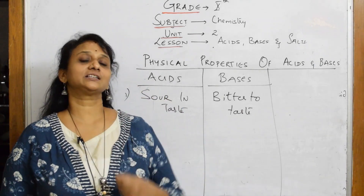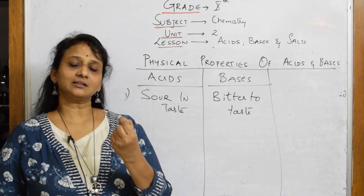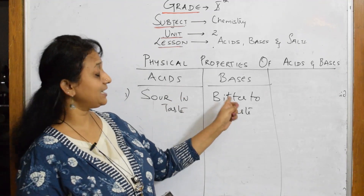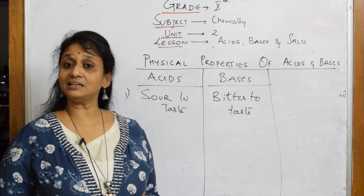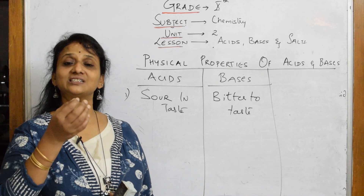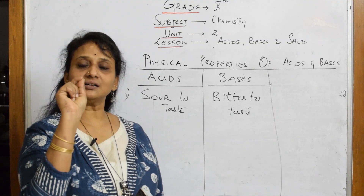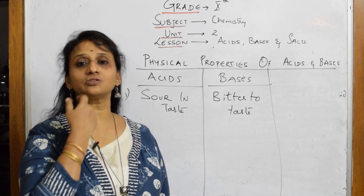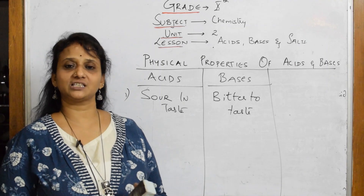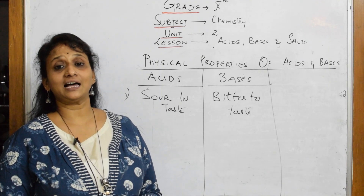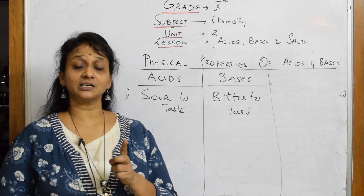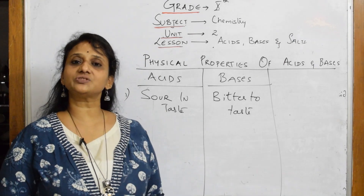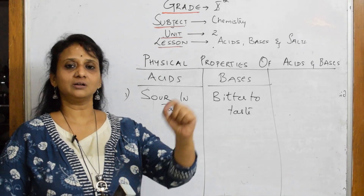Now, how do we test acids and bases? Remember, there are two categories: strong acid and weak acid, strong base and weak base. In the lab, when performing experiments, never test with your tongue — strong acids or bases may create a blister or hole. That is why we use lab coats and never touch them directly. Acids are sour to taste; bases are bitter to taste.